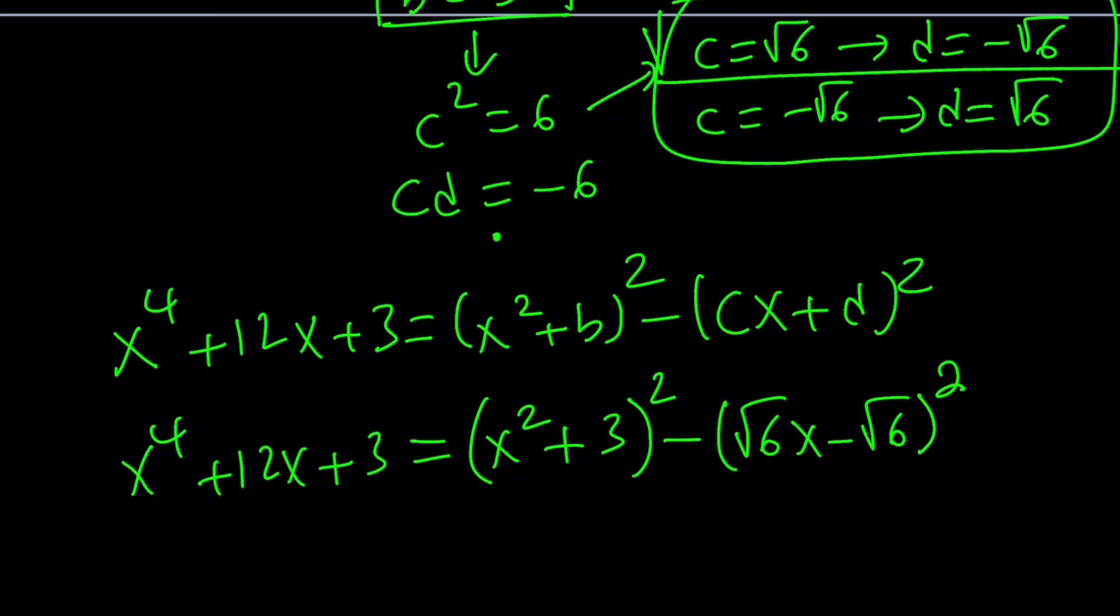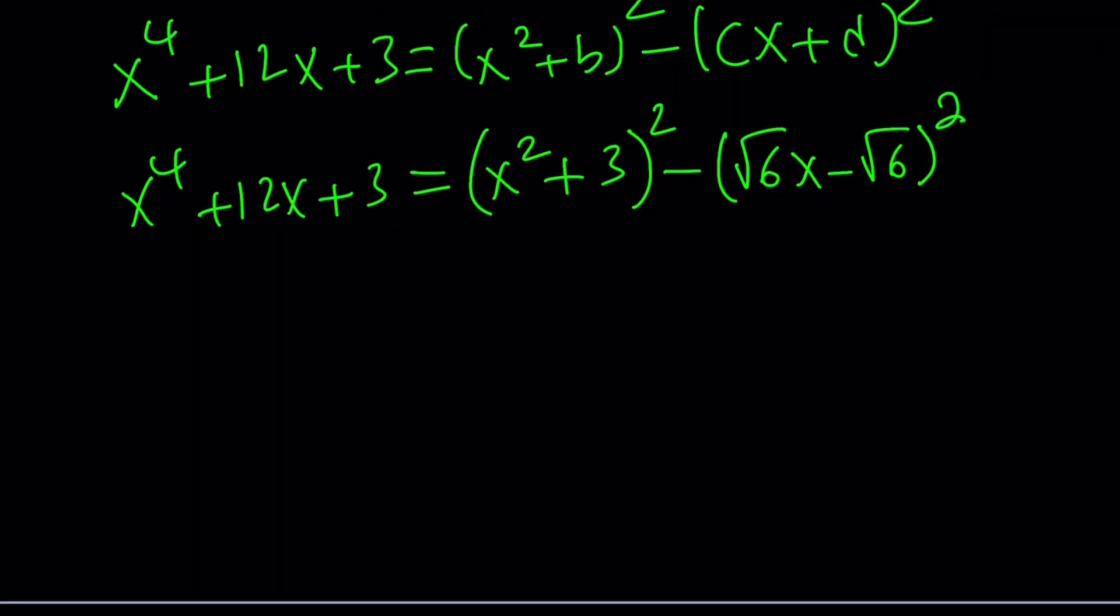Yes, I am. If you expand, you're going to notice that you're going to get 6x squared. That's going to cancel out and we're going to end up with what we have. Great. Now we can set it equal to 0 and factor this expression using difference of two squares. Here's what it looks like.